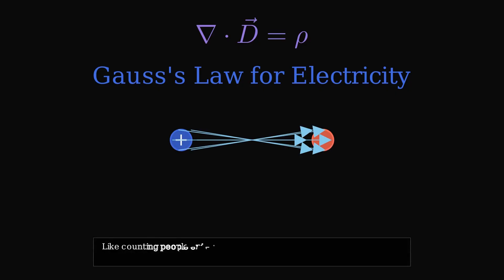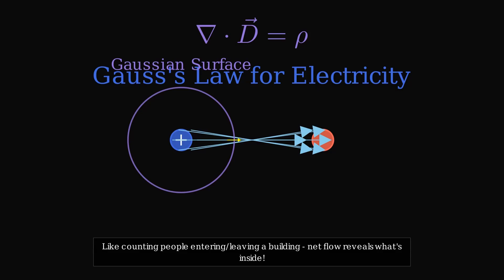It's like counting people entering and leaving a building. The net flow reveals what's inside. We can draw an imaginary surface around any region. The total electric field flowing out tells us the total charge enclosed inside.